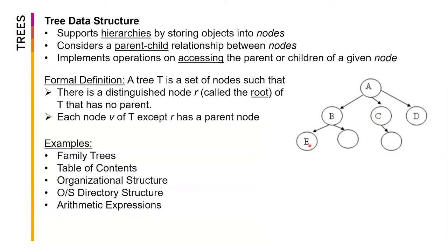We can see that A is the parent of B, C, and D, while B, C, and D are the children of A. There is a parent-child relationship among nodes. When it comes to accessing records on a tree data structure, we basically access the parent or the children of a specific node. If we start at A, the only things we can access are its children: B, C, and D.